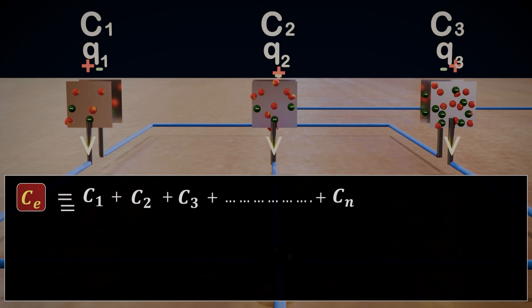So, if we have five capacitors of the same capacitance, say C, the total capacitance will be 5C. In general, for N capacitors of the same capacitance, the equivalent capacitance will be NC.